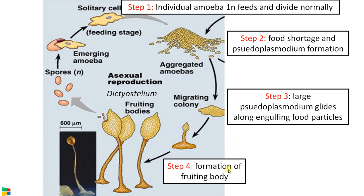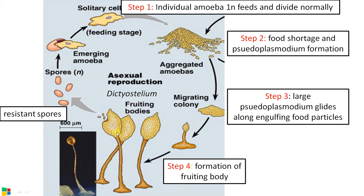In Step 4, these cells start forming fruiting bodies. The fruiting body has a stalk and a head. Many haploid nuclei move to the head region and later transform into spores. In Step 5, resistant spores are released by the breakage of the fruiting wall of the fruiting body. These are highly resistant spores that can withstand unfavorable conditions.